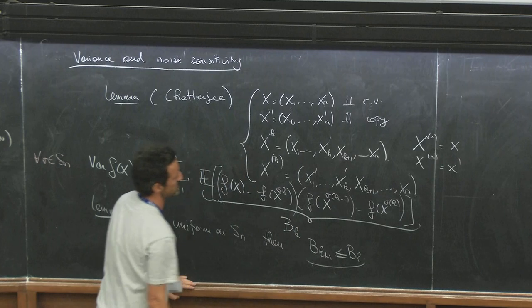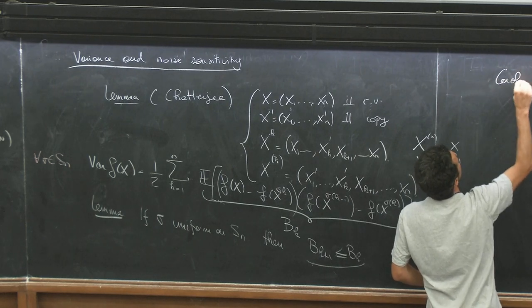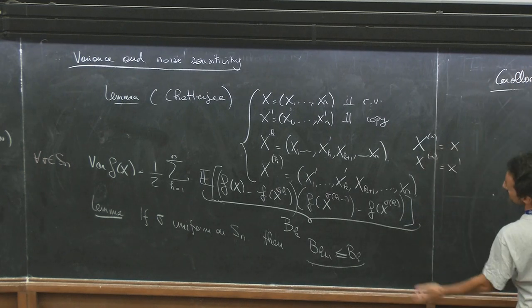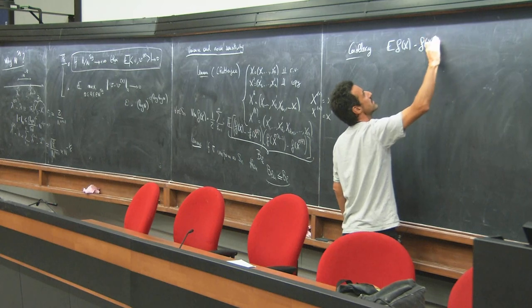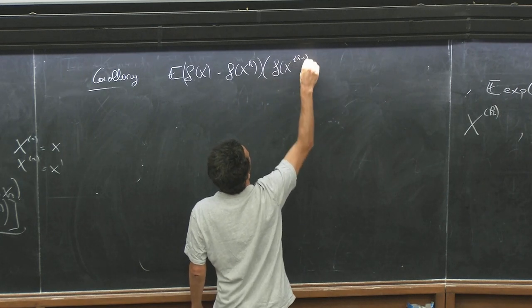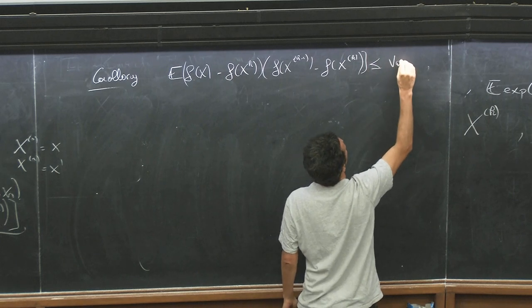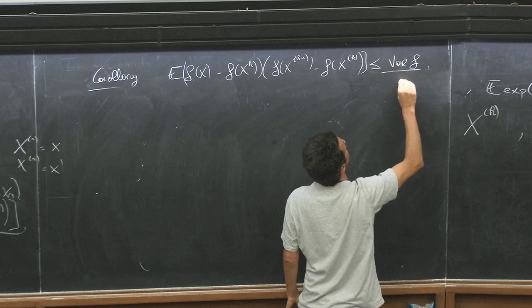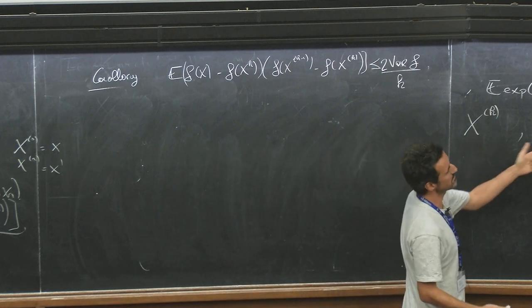A corollary of that is that the expectation of [f(x) - f(x_k)] · f(x) is less than the variance of f divided by k, up to a factor of 2. Because it's decreasing, we can now come back to our problem with x_k, lambda_k, and so on.